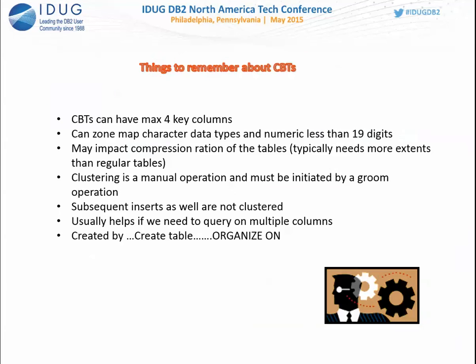Things to remember about clustered base tables: you can have a maximum of 4 CBT columns, and you can zone map additional data types like numerics. Compression ratio will be impacted. Clustering is a manual operation — you create the CBT and must run the GROOM utility (similar to DB2's REORG) to cluster the data. Future inserts and updates won't be clustered automatically, so you'll need to periodically re-run GROOM.